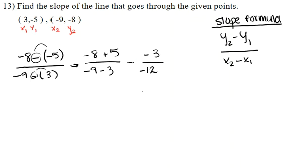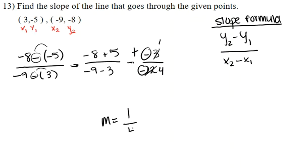When you go ahead and reduce that — because it is reducible — 3 can go into itself one time, and 3 can go into 12 four times. And we know that when there are two negatives dividing by each other, those will become a positive. So we know that our slope, which is m, is going to be 1/4. And that's your final answer.